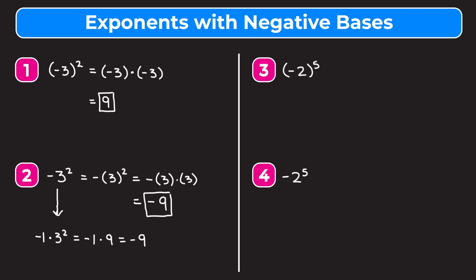Now let's move on to example 3, which is the quantity of negative 2, that entire thing raised to the fifth power. Because negative 2 is in parentheses and that entire thing is being raised to the fifth, this is the same as negative 2 times itself five times. The fifth power tells us how many times we want to multiply our base, which is negative 2.